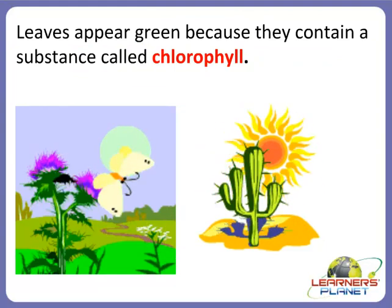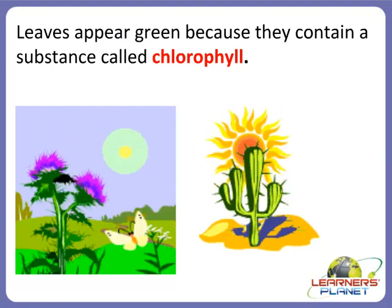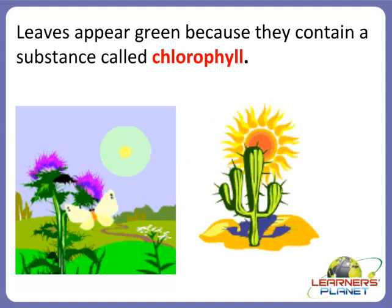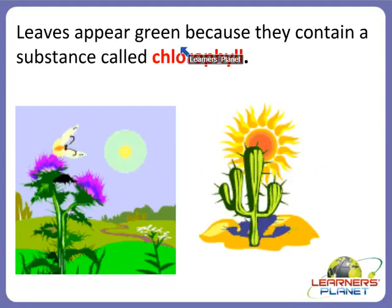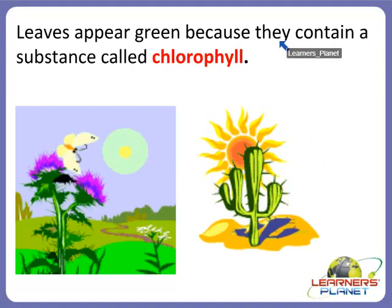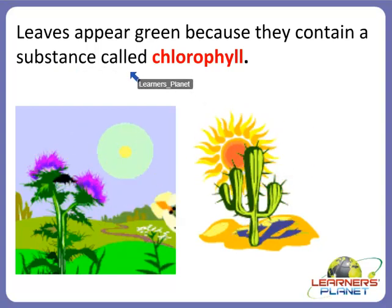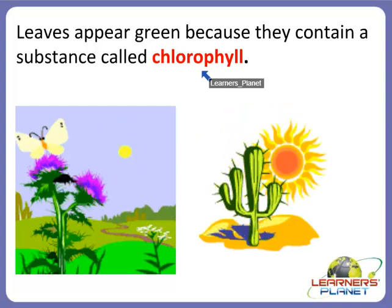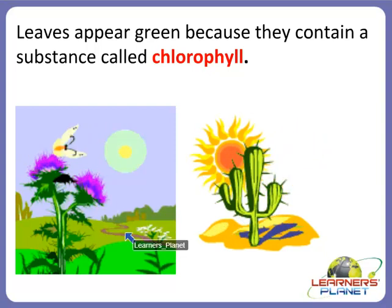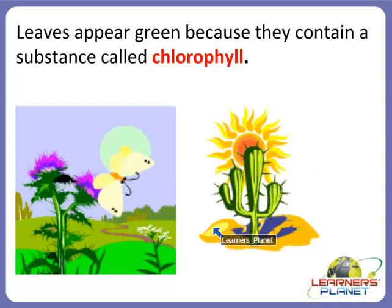Many leaves appear green in color. Why are they green? Because they contain a substance called chlorophyll. Chlorophyll helps leaves to prepare food.